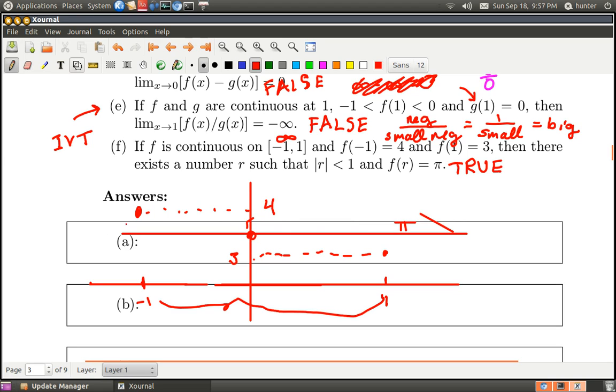The Intermediate Value Theorem says that if I'm going to continuously connect these dots with a continuous line, I have to cross this barrier. That's what the theorem says. This crossing point is what gives you r—the number such that when you put it into the function, pi comes out. So f(r) equals pi. That's why this is true. Keep in mind this only works if f is continuous. And that's it for these true-false questions.